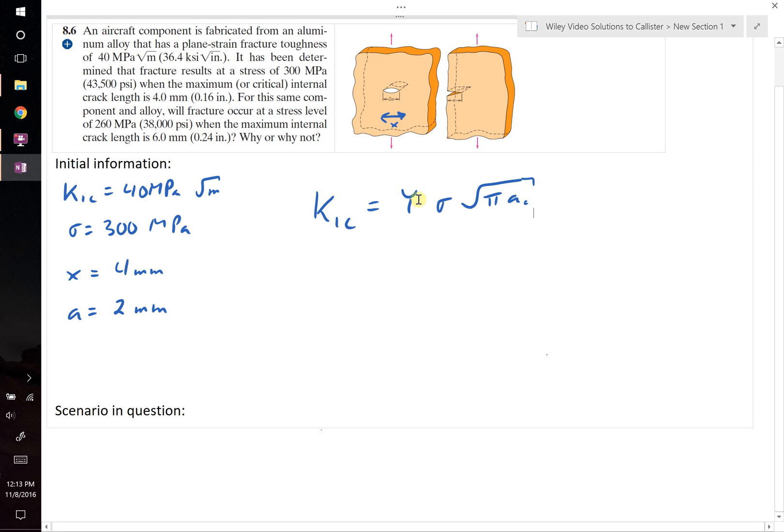Normally, y is equal to 1.12 for these materials. However, it can be larger. And in this case, we're given information for K1c, sigma, as well as the half-crack length. Therefore, we're going to solve for y.